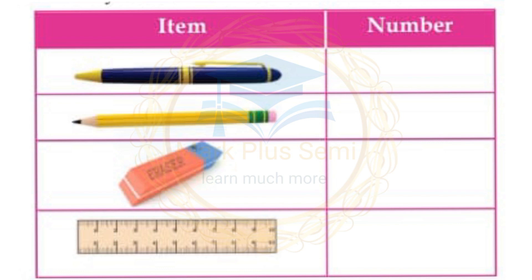What do you do? In your class, you can use these things: pen, pencil, eraser, and scale. Count them and the total number equals 5.